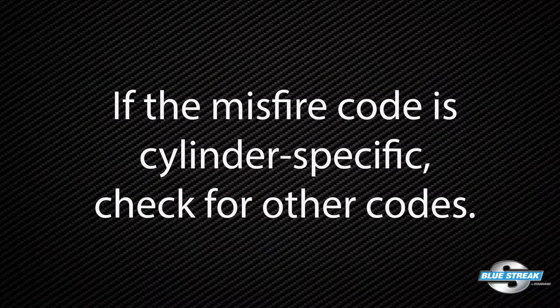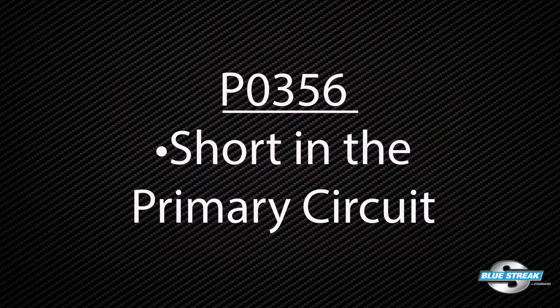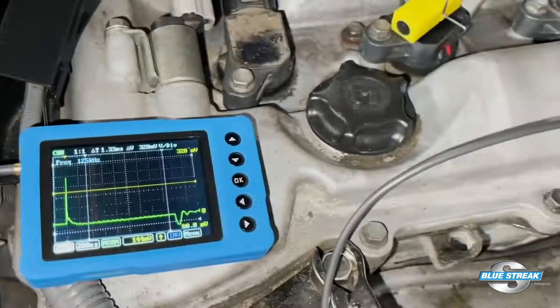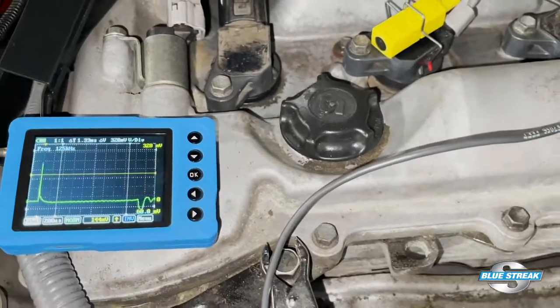How could Swaptronics damage be avoided? The proper answer is proper diagnostics. If the misfire code is cylinder specific, check for other codes. Often there will be codes for a coil circuit, like P0356 for a short in the primary circuit. If there are no codes, you can test the coil with either a scope or a meter.